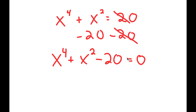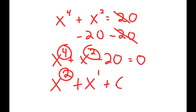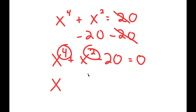Now, this may seem like a quadratic equation, but it's not, because we have the power of 4 as our primary term, and then that's followed by the power of 2. In a normal quadratic equation, we have 2 as our primary, then we just have 1, and then we have some constant C. So how are we going to solve this?